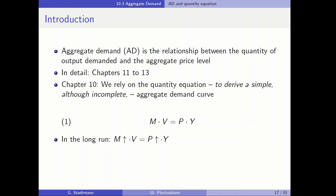Welcome back to class. We would like to derive one theoretical model where aggregate demand and aggregate supply play a role and which can be used to explain fluctuations in the business cycle.